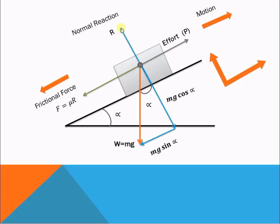R is in the upward direction, along the positive y-axis, and mg cos α is along the negative y-axis.